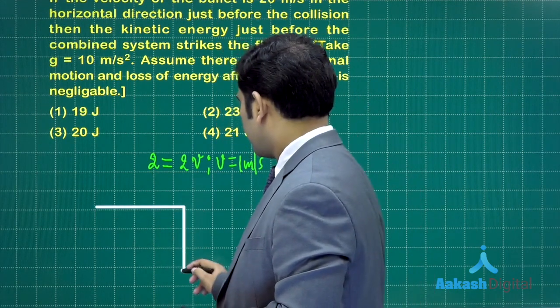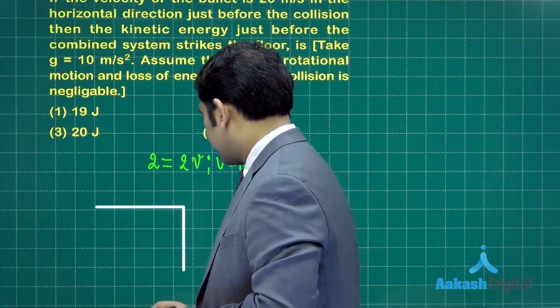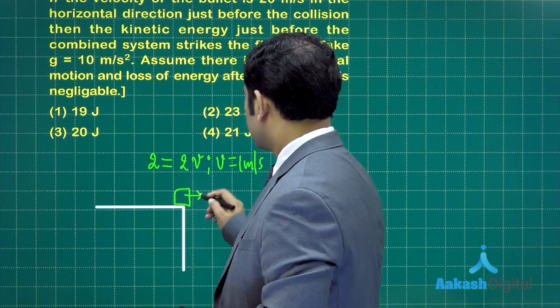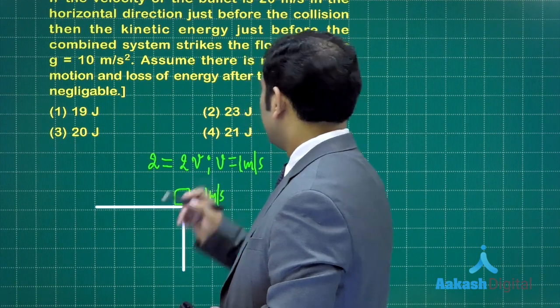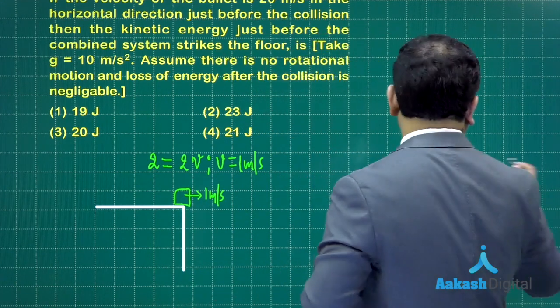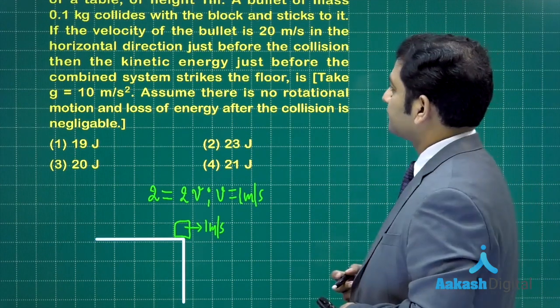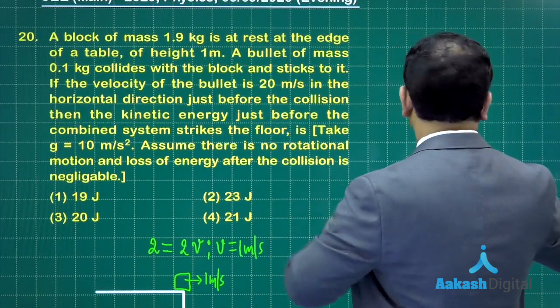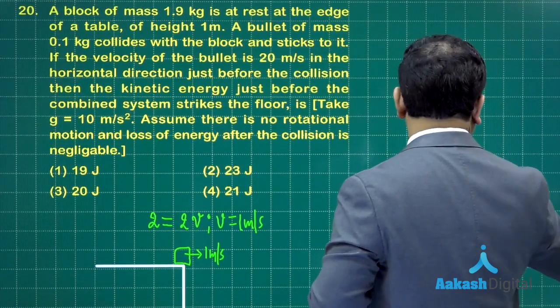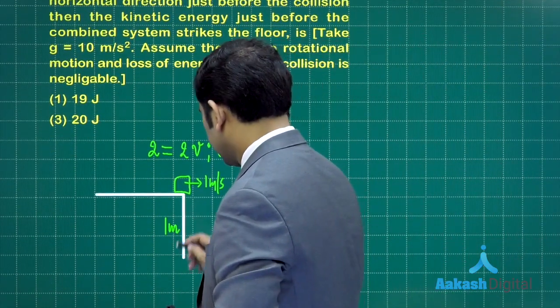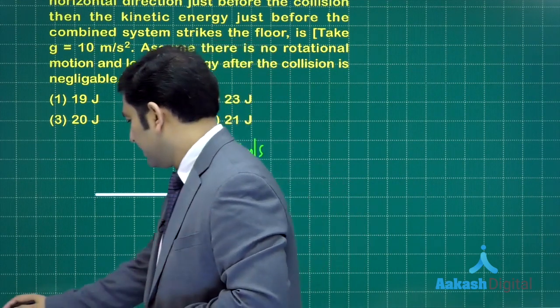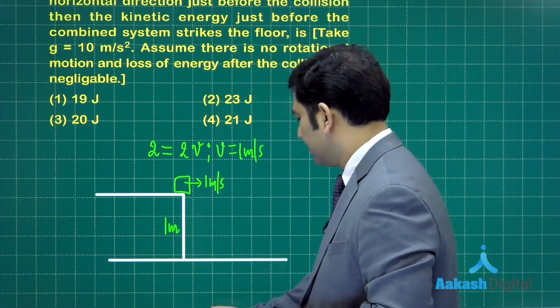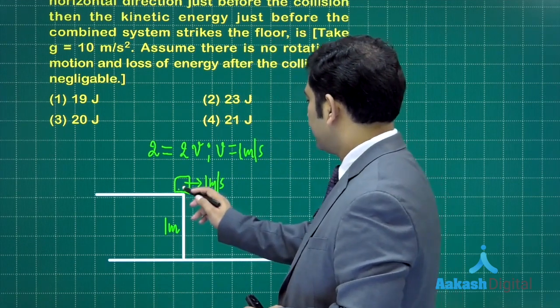Let's see a quick figure. This is the arrangement, and this moves with 1 meter per second. There's also the height, which is given - the height of the table is 1 meter. This is 1 meter, and this is the ground.